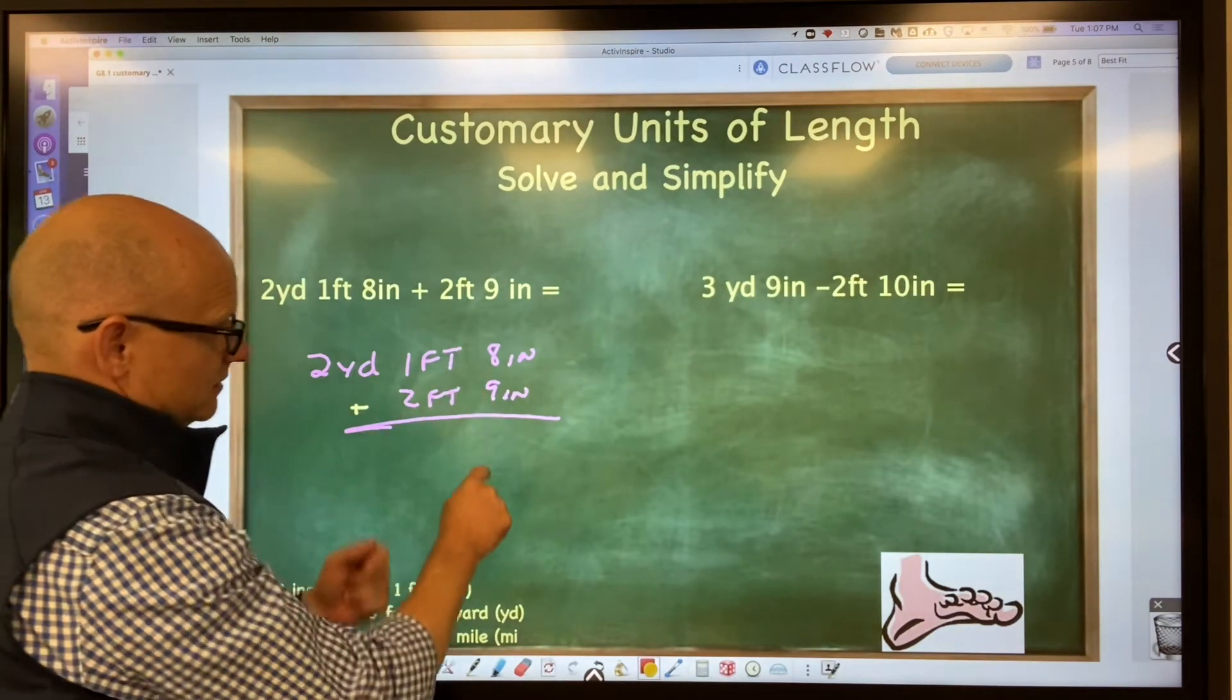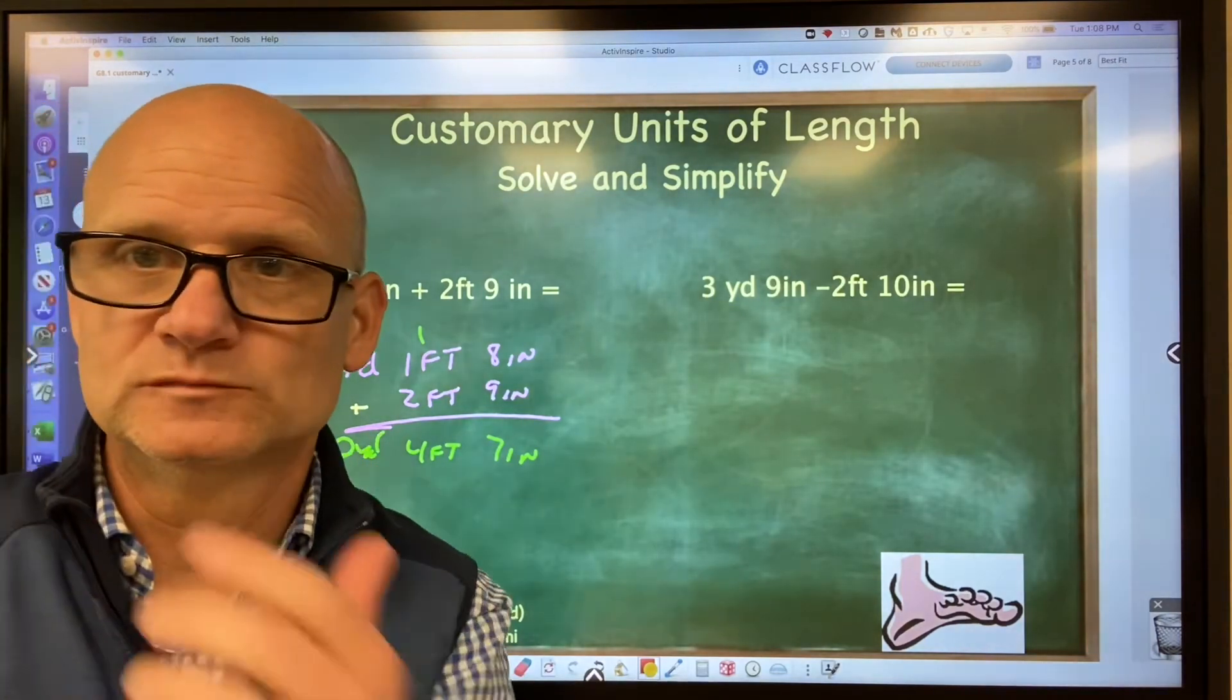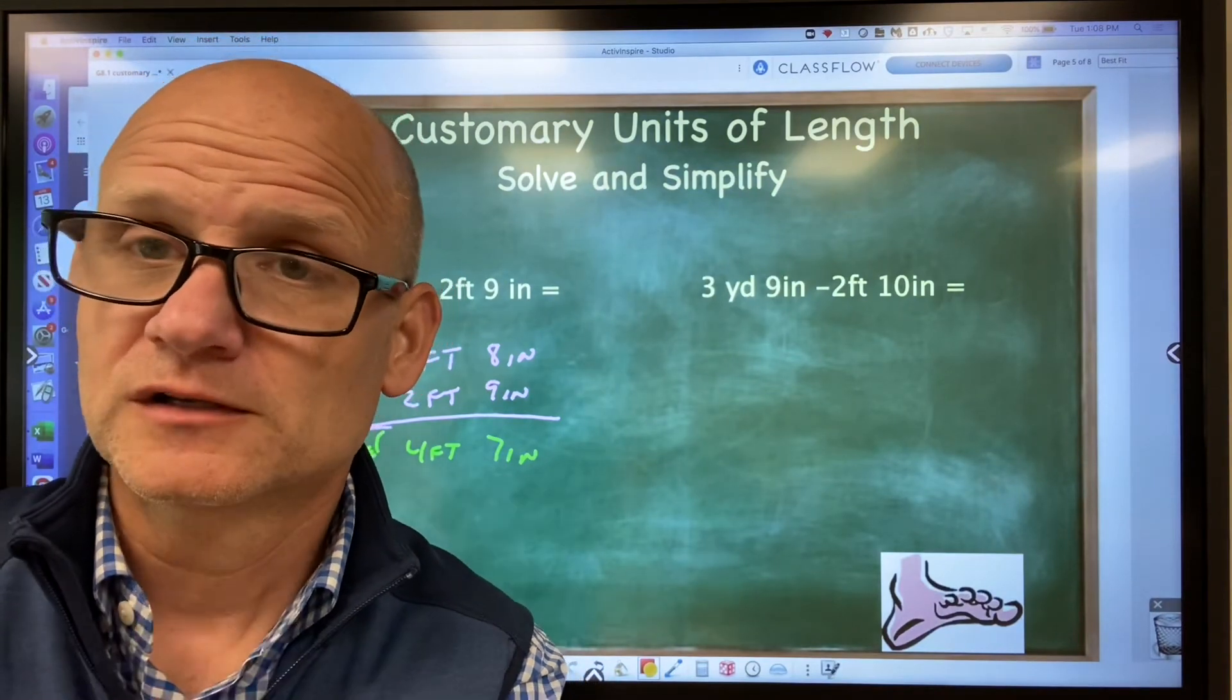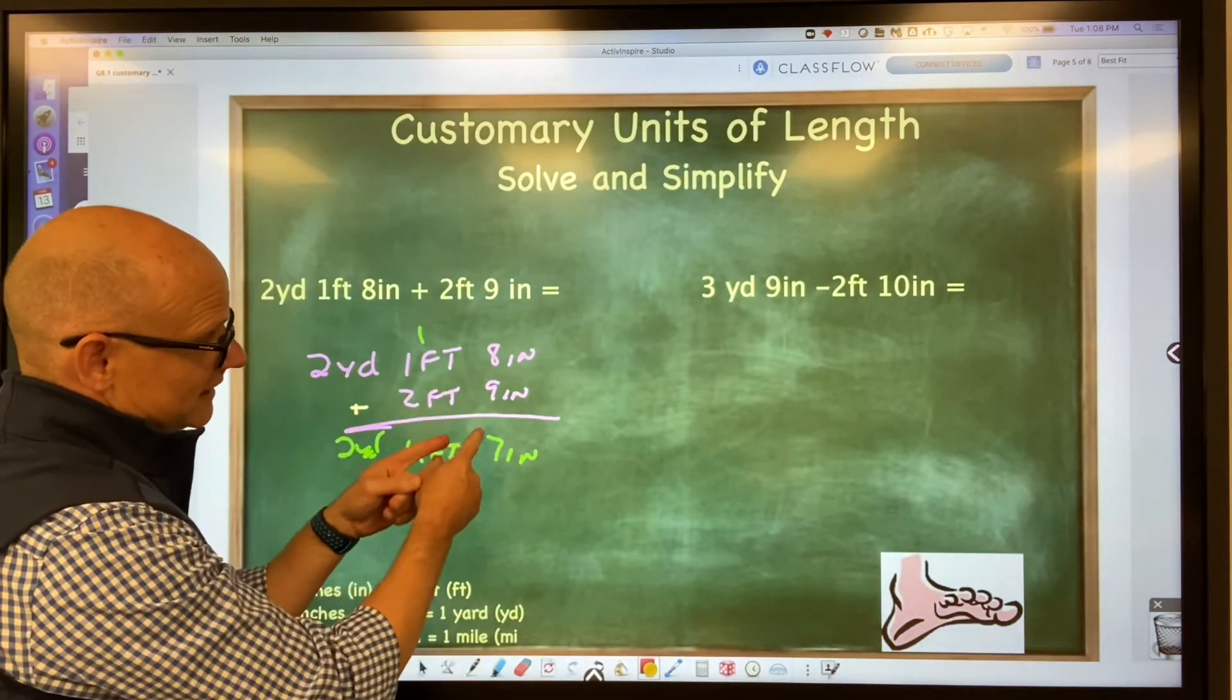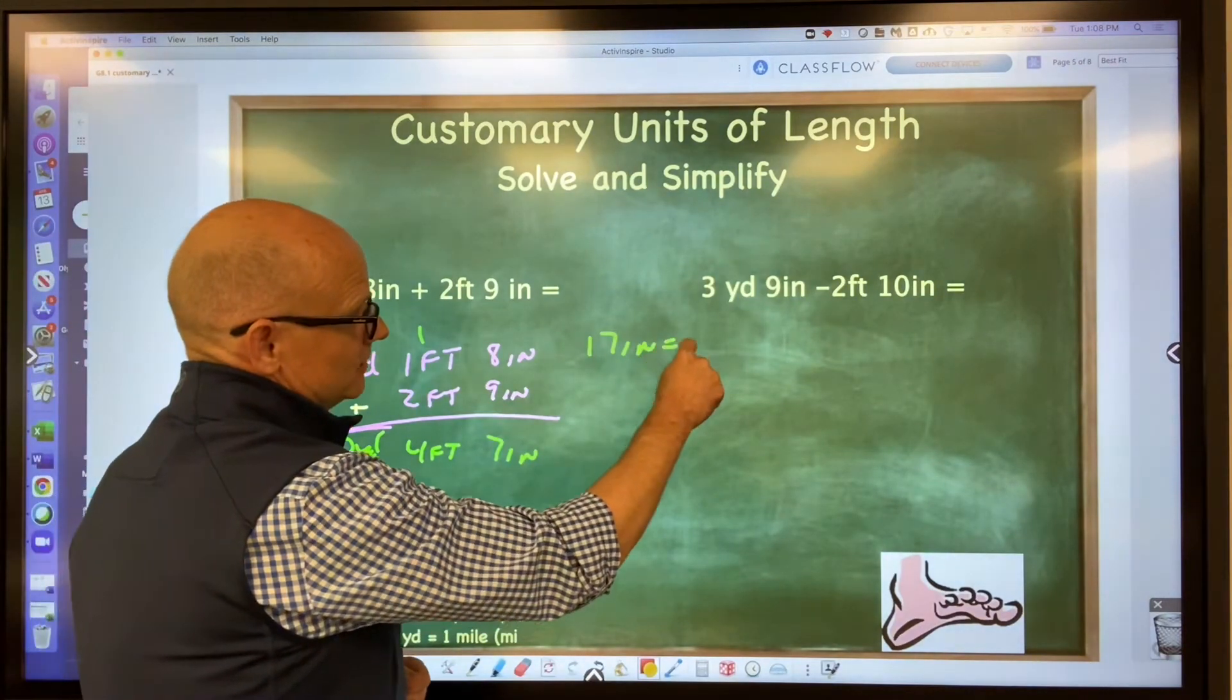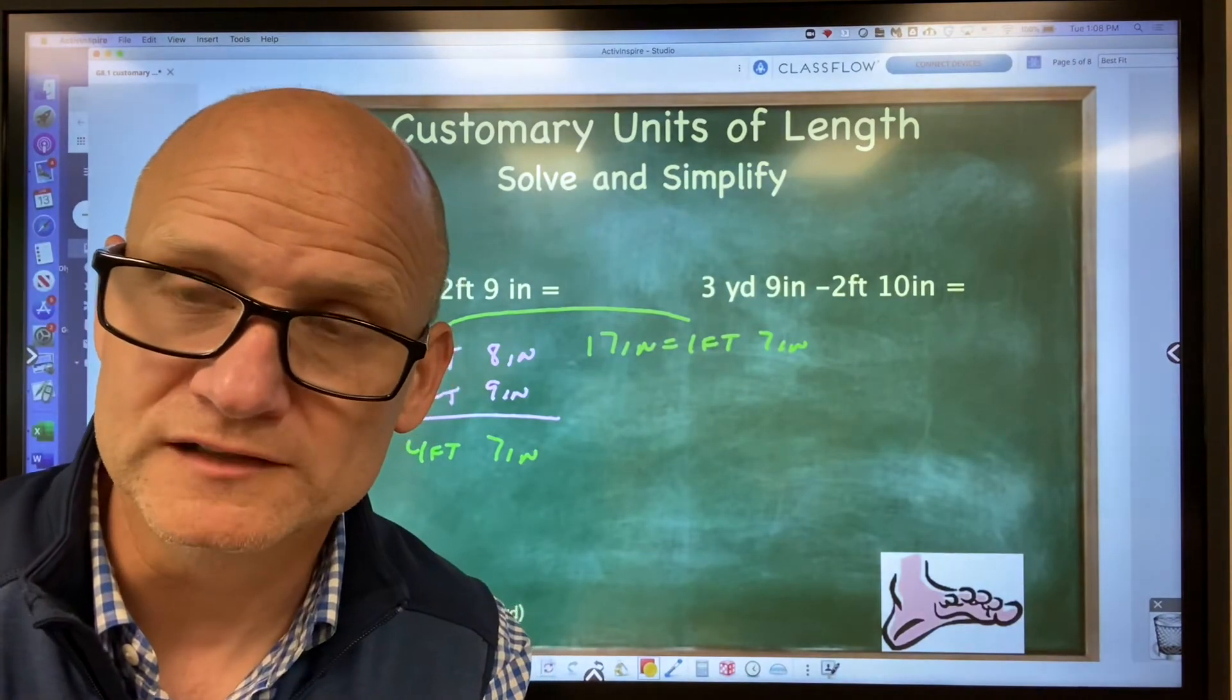I'll see them say this is 17, then carry the one. Then they'll say this is four feet, then two yards. But they made a mistake. Do you know what it is? The mistake is they're saying this is base 10 because they're carrying one. They're saying 17 inches equals one foot seven inches. Do you see that? They carry that foot over and have seven left over. But 17 inches doesn't equal one foot and seven inches.